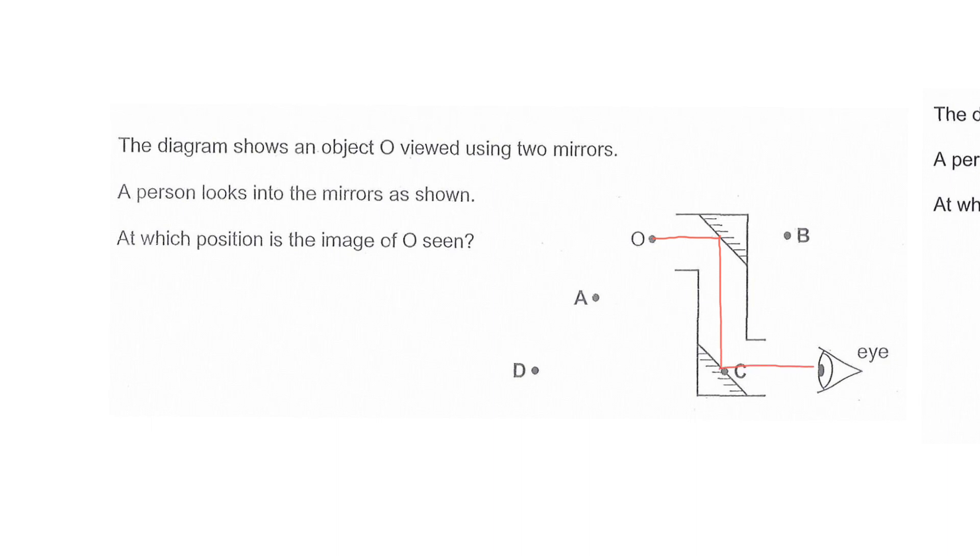There's actually a shortcut in this question and straight away you will know the answer because the last ray that enters into your eye is this ray, and our eyes always perceive that light travels in a straight line. So the eye will actually think that the image must be along this line, and D will be the answer.